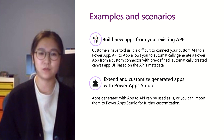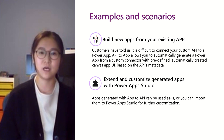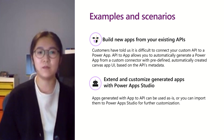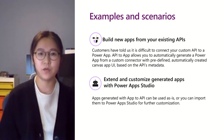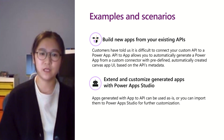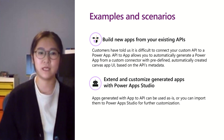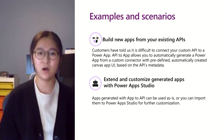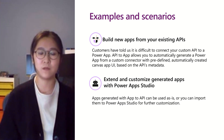Let's look at real examples and scenarios. Our customers have told us it is difficult to connect a custom API to Power Apps. With API to App, you can now automatically generate a Power App from a custom connector with predefined, automatically created Canvas app UI based on the API's metadata. After you convert that draft app, if you're happy with it, take it as-is. But if you or your team wants to extend it, you can leverage Power Apps Studio — since it's just a normal Canvas app, you can freely add screens or more functionalities to fit your business needs.